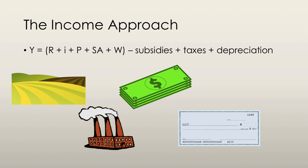We also have the statistical adjustment, which is essentially just the difference between the income and expenditure approach of calculating GDP. We're also going to subtract subsidies, add taxes, and add depreciation. So RIPSAW gives us the net domestic income at factor cost. To get from factor cost to market prices, we subtract subsidies and add in taxes to get the net domestic income at market price. Then to get from net to gross, we simply add in depreciation and we have gross domestic product.